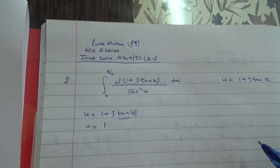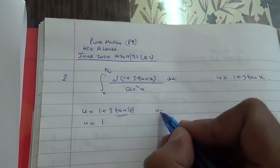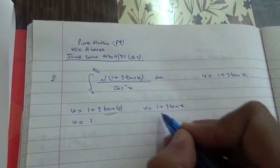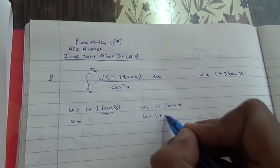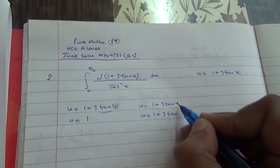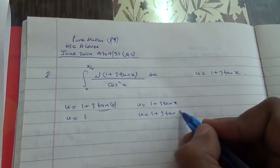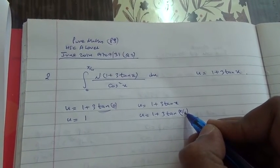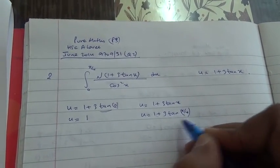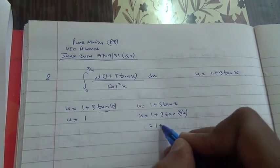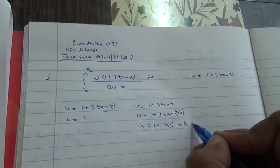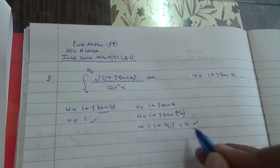And what is the second one? So the second one is u is equal to 1 plus 3 tan of x. This is basically 1 plus 3 tan x is pi over 4. And what is pi over 4? Pi over 4 is 45 degrees, this is 1. Therefore, we're going to have to say 3 times 1, and u is going to give us 4. So the new limits are 1 and 4.